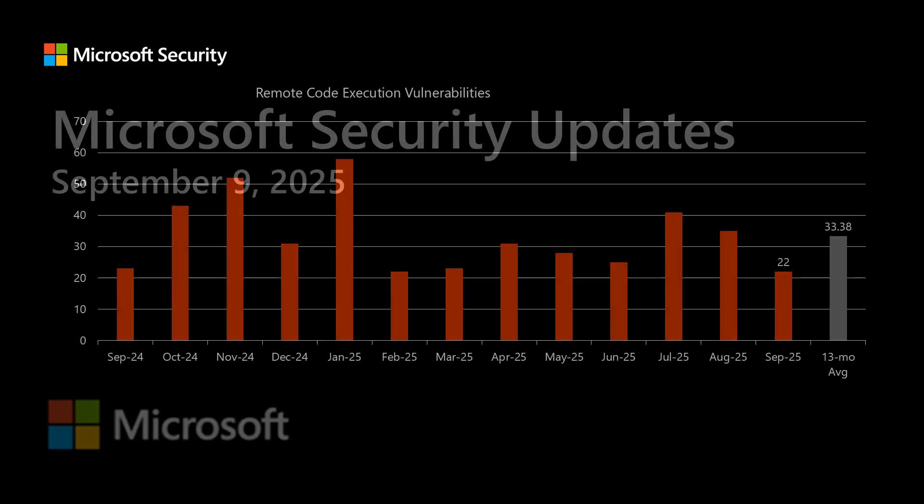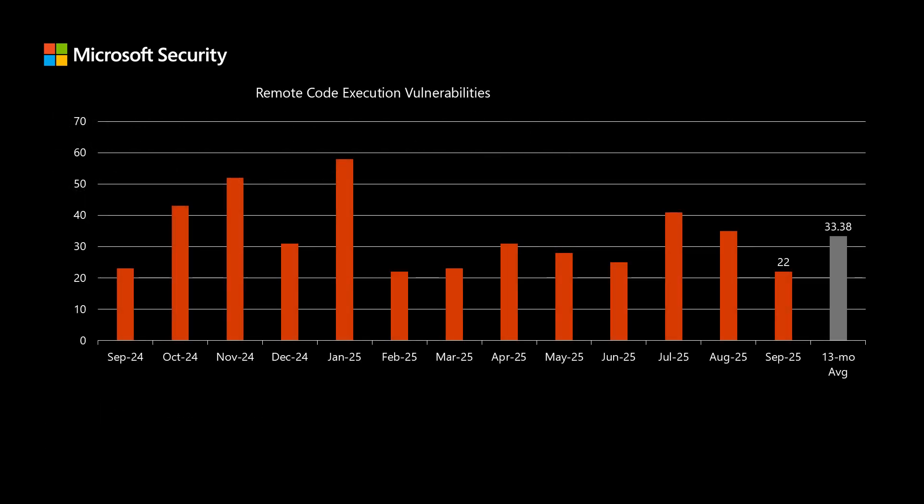Please note that the details of the vulnerabilities covered in this video may change, and the authoritative location for information will always be the online content in the Security Update Guide. Before I dig into today's release, I'd like to compare it to the previous 12 months to see how it stacks up. We have a total of 81 newly disclosed vulnerabilities, and of those 81, 22 fall into the remote code execution impact, which is a little bit lower than the 33.38 average we've been seeing over the past 13 months.